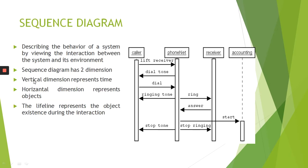The next one is sequence diagram. It describes the behavior of a system by showing the interaction between the system and its environment. This sequence diagram has two dimensions. The vertical dimension represents time — you can see the timeline here, and this vertical line shows the passage of time. The horizontal dimension represents objects: caller, phone network, receiver and the other party. The lifeline represents the object existing during the interaction.